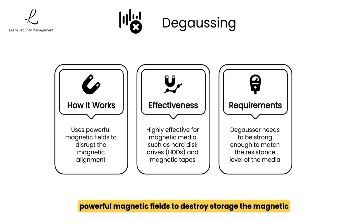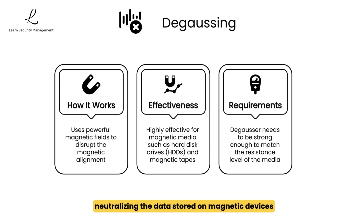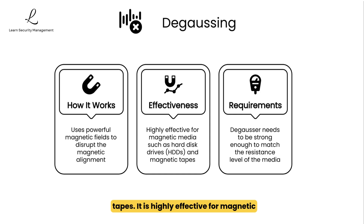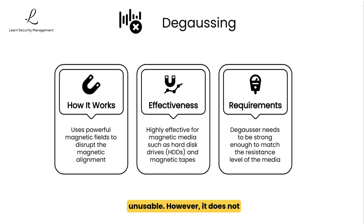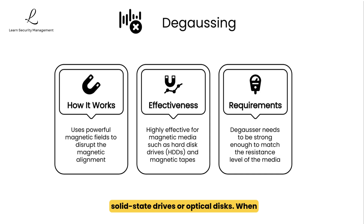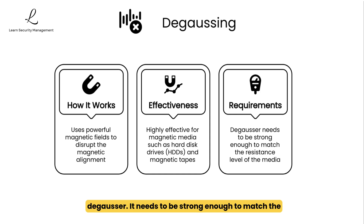Degaussing uses powerful magnetic fields to disrupt the magnetic alignment of storage media, effectively neutralizing the data stored on magnetic devices such as hard disk drives and magnetic tapes. It is highly effective for magnetic media, often rendering the device permanently unusable. However, it does not work on non-magnetic storage technologies like solid-state drives or optical disks. When using degaussing, consider the power of the degausser — it needs to be strong enough to match the resistance level of the media to fully erase the data.